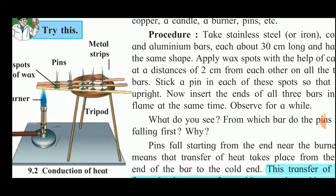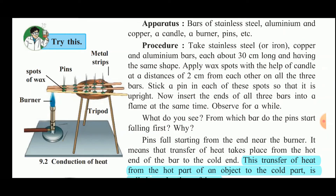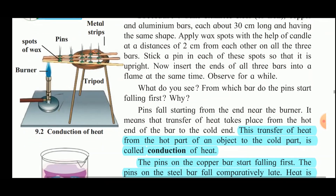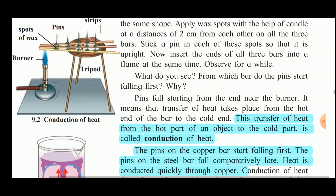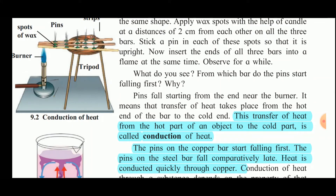The three rods — aluminium, copper, and stainless steel — are heated using the burner. Copper is the best conductor of heat among the three. As heating begins, the pins start falling from the end nearer the burner, showing that heat transfer takes place from the hot end of the bar to the cold end. This transfer of heat from the hot part of an object to the cold part is called conduction of heat.